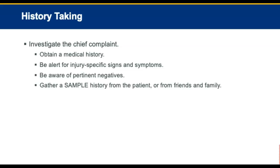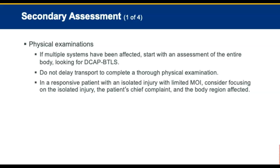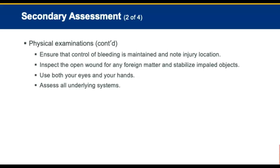For history taking, investigate the chief complaint, obtain a medical history, and be alert for injury-specific signs and symptoms. Be aware of pertinent negatives, such as no pain or loss of sensation. Get a SAMPLE history, attempting to gather from friends or family if the patient is unresponsive. In the secondary assessment, if multiple systems are likely to be affected, start with assessment of the entire body looking for DCAP-BTLS. Do not delay transport to complete a thorough physical exam. In a responsive patient with an isolated injury and limited mechanism of injury, consider focusing your physical examination. Ensure that control of bleeding is maintained and note the location of the injury. Inspect the wound for any foreign matter and stabilize any impaled objects.